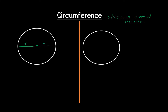The distance from the circumference through the center of a circle to the circumference is what we call diameter. In short, diameter means radius plus radius. In one diameter we have two radii. So we can say that diameter is the same as 2r.